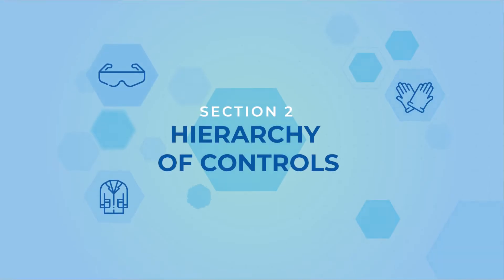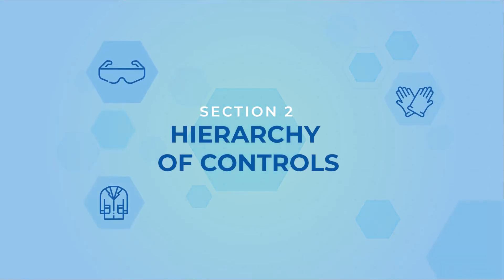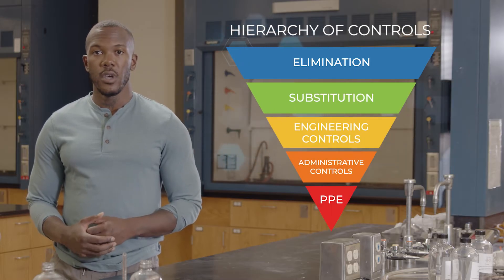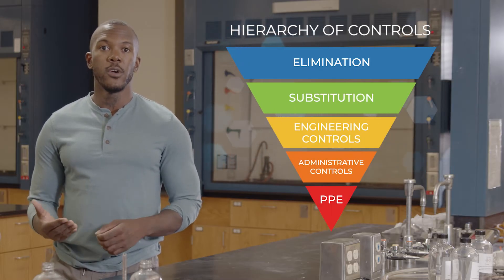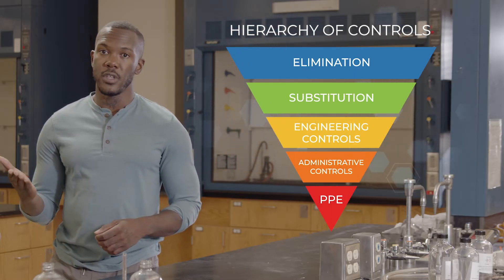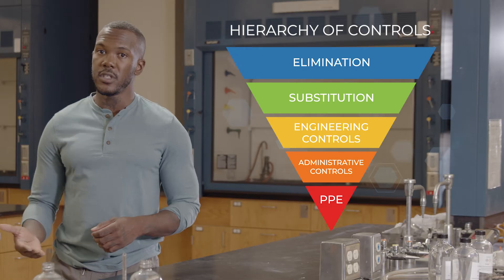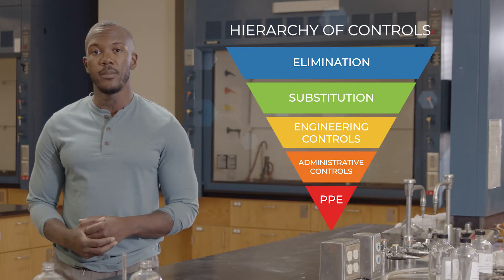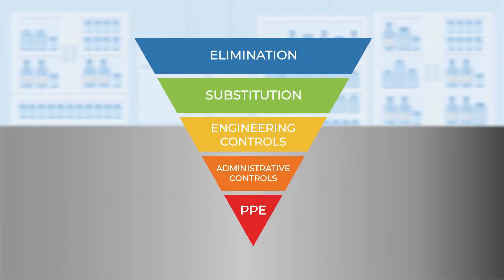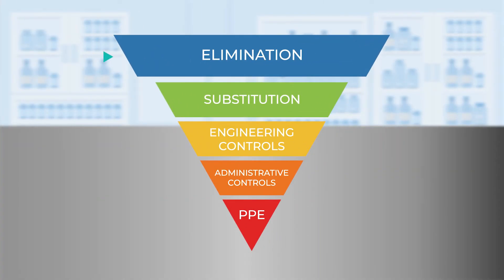Once we've identified these potential routes of exposure, minimizing risks is the next step. A common way to think about reducing risk is the hierarchy of controls. This inverted pyramid shows the most effective strategies at the top and the least effective or less reliable at the bottom. At the top of the pyramid is elimination, which is the best way to minimize risk. If there's no hazard, there's obviously no risk.